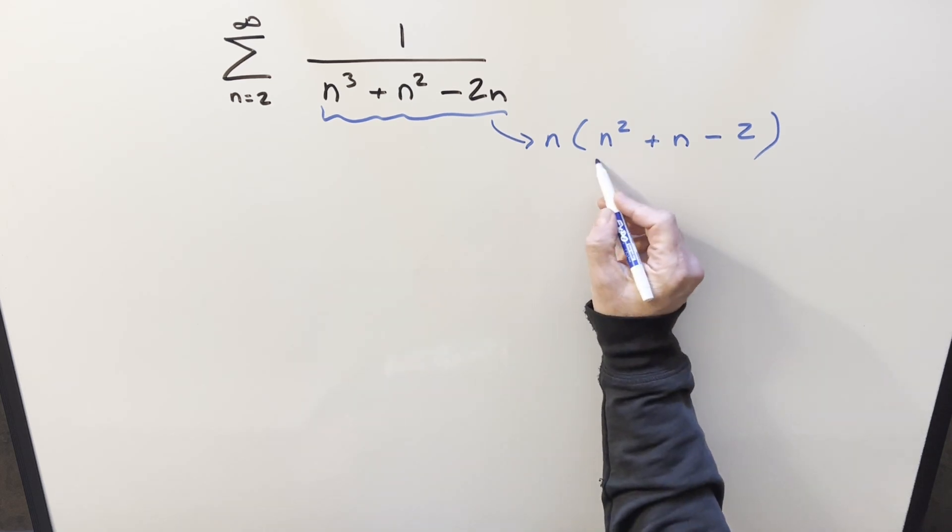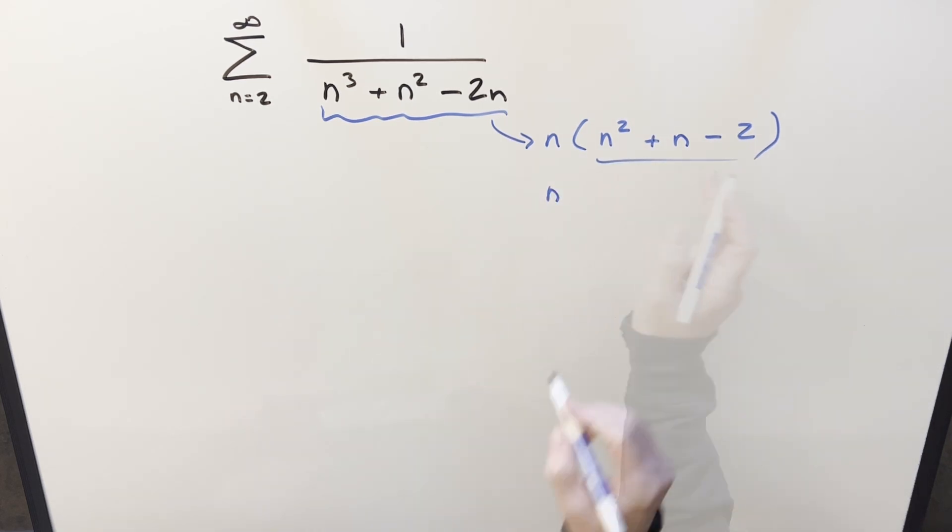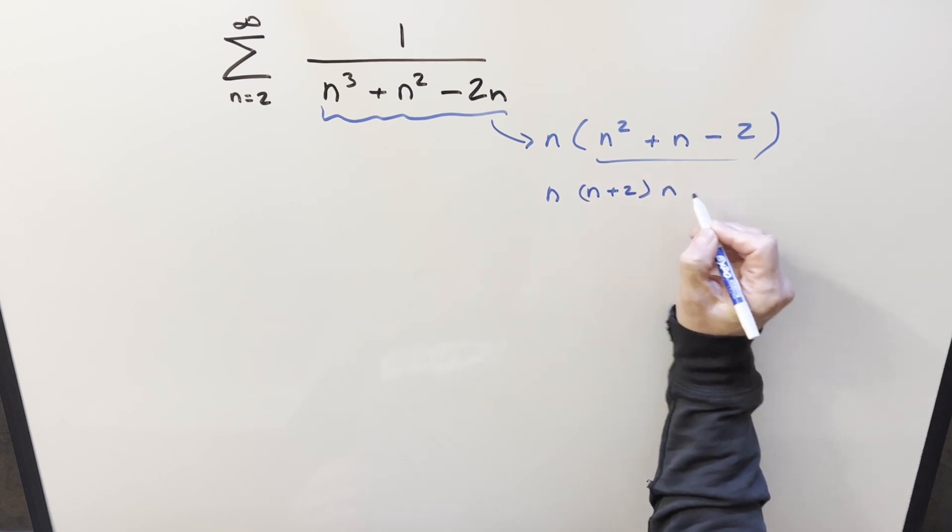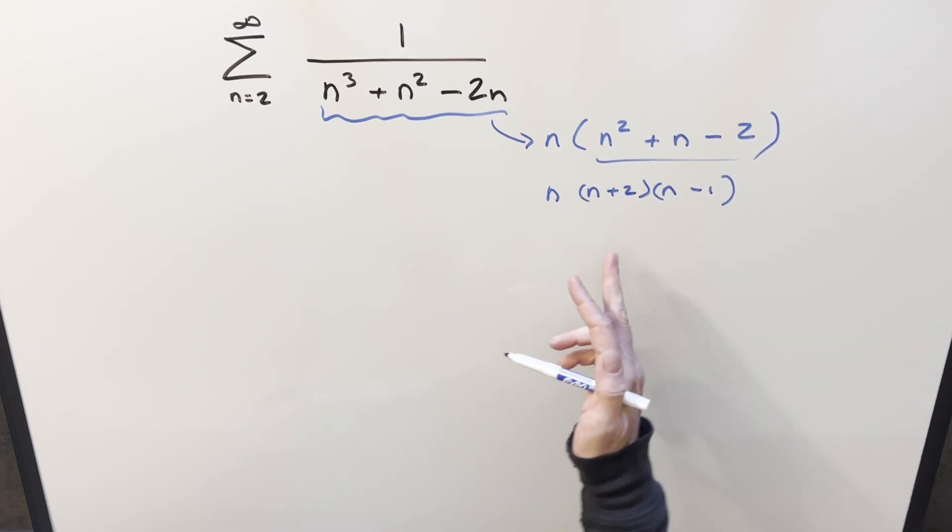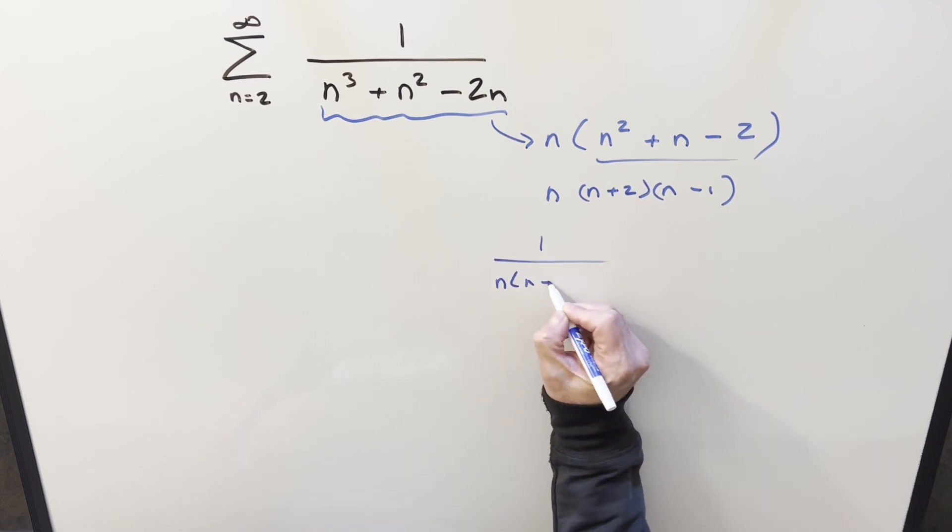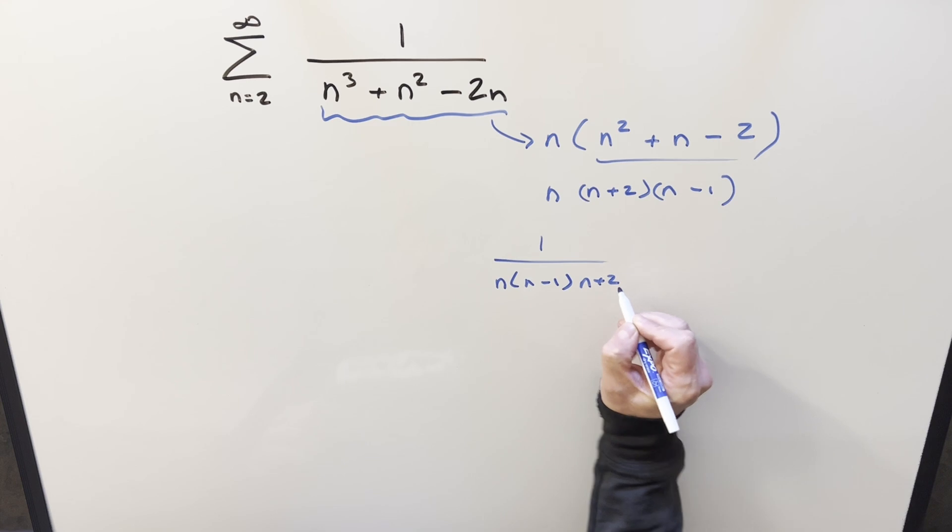But then I can factor this thing further. We have the n out front. For this thing, I can write it as n plus 2 times n minus 1. So then putting this back in as a fraction, this whole thing is going to be 1 over n, n minus 1, n plus 2.